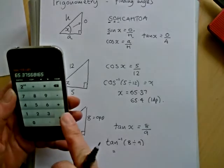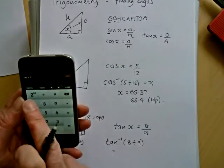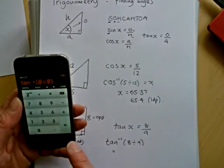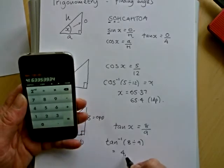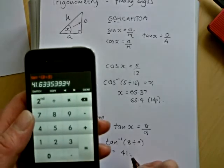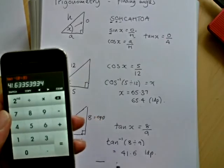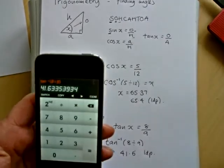So we'll go back to this one here. So go to tan minus one, 8 divided by 9, and our answer is 41. I'm just going to round this off. You can see it's 41.63. I'll round it to one decimal place. So that's how we use trigonometry to find missing angles in right-angled triangles.